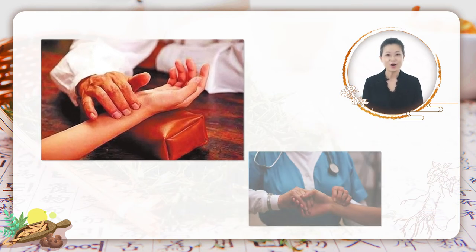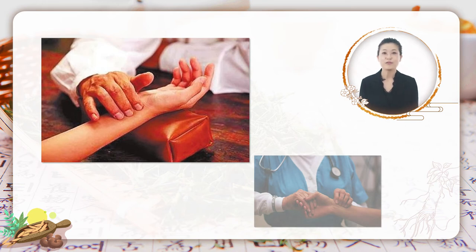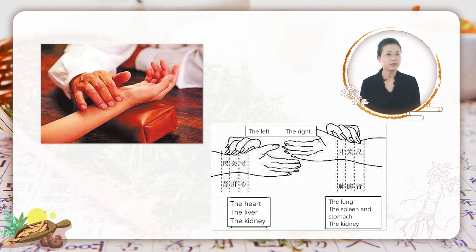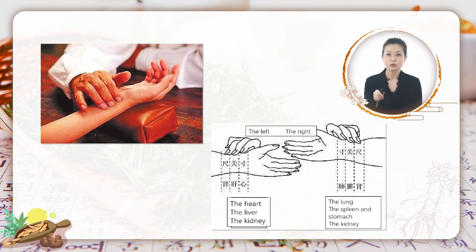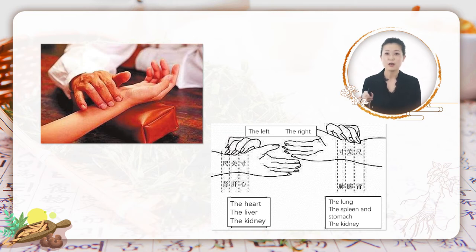We see a pillow on the left picture — that is why we figure out this one is pulse taking. Yes, you are right. Pulse taking is one of the most important diagnostic methods in TCM. The theory it is based on is that the human body is a holistic unit. So on each wrist, there is a special location that indicates internal viscera respectively. For example, on the left hand, from this position to that position, named as chun, guan, and chi in TCM, can indicate the heart, the liver, and the kidney.